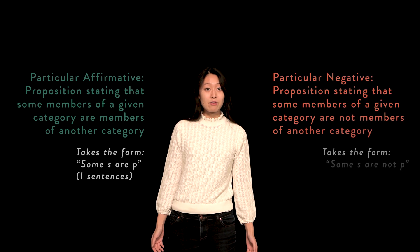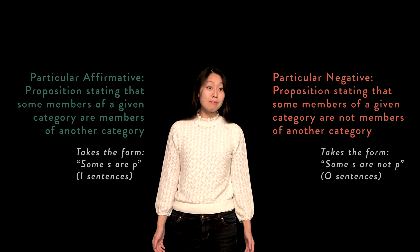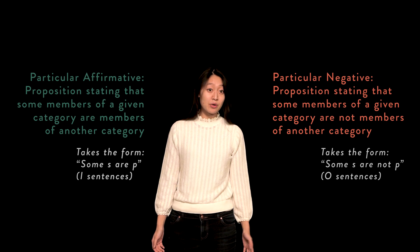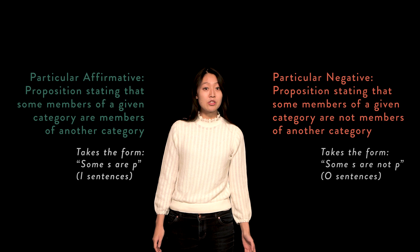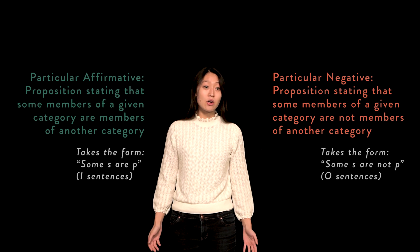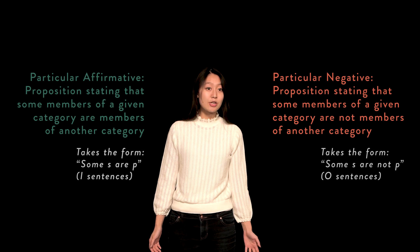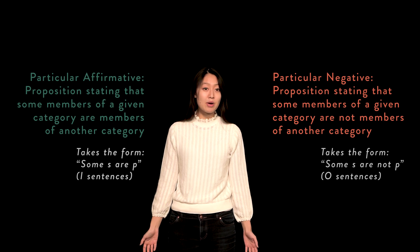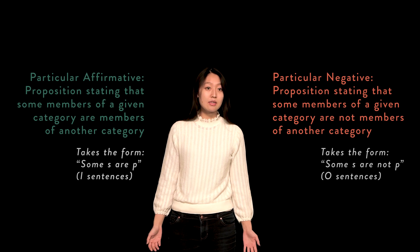Particular negative: a proposition stating that some member or members of a given category do not belong to another category, also referred to as 'some S are not P,' where S is the subject and P the predicate. These are also sometimes referred to as O sentences.